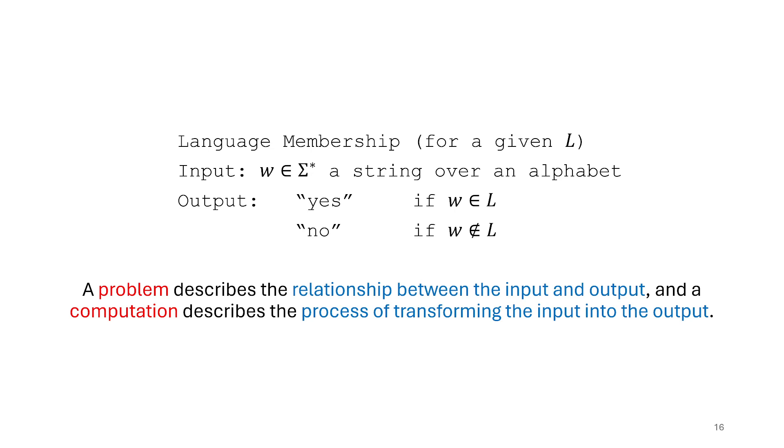And you'll notice that what this problem does, this information processing problem, is it links for us the input with the output expectation. So it's going to be a relationship between the input and the output, but it never tells us how to get from the input to the output. So that problem itself just tells us what the expectations of the computation are, and the computation itself is what's going to carry us from the input to the output.